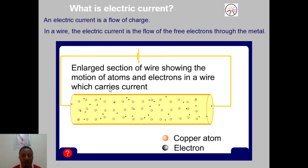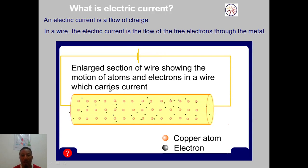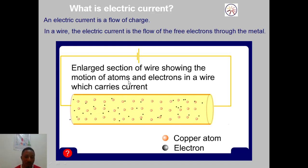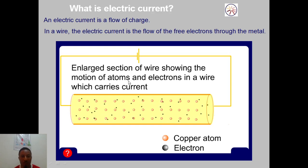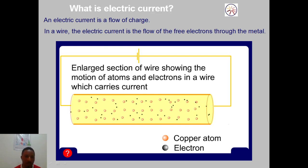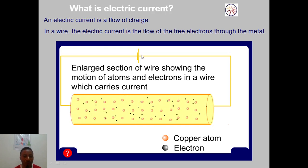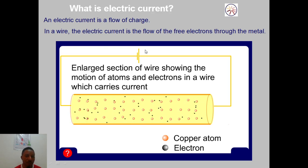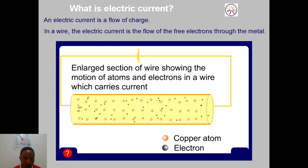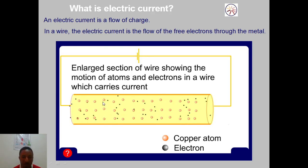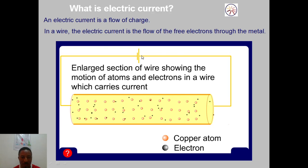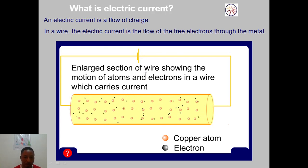Let's have a magnified view of what is happening in a wire connected to a cell. Electric current is actually the flow of charge or the flow of electrons from one point to another. These electrons are forced to move by the cell. You can see the electrons flowing from one end of the wire to the other, back to the positive side of the cell.